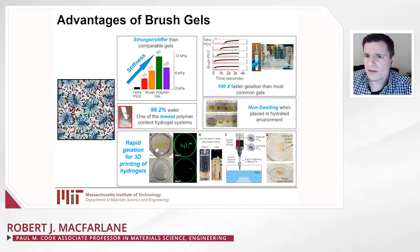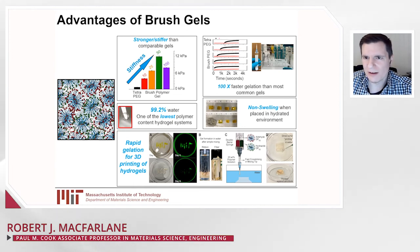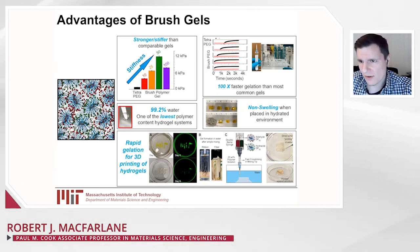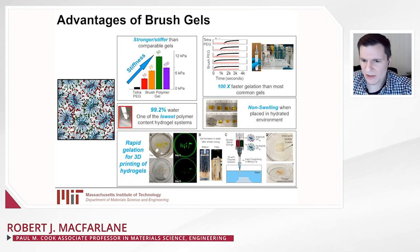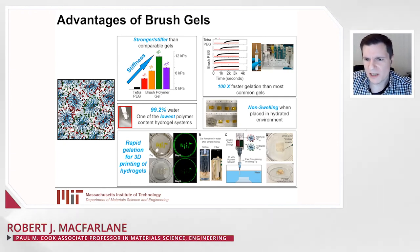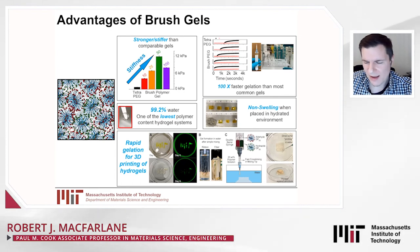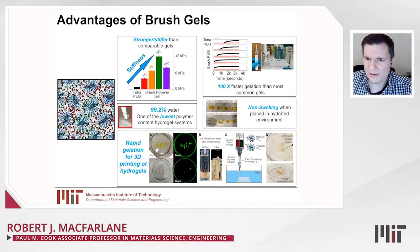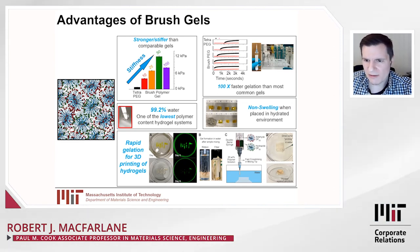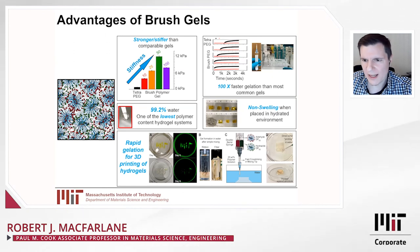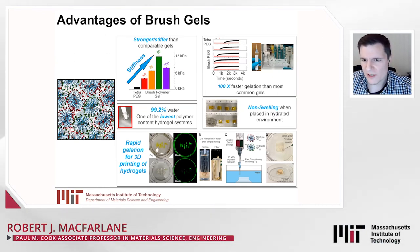These materials gel incredibly rapidly. A common tetra-PEG gel only gels after about 15 minutes, whereas our bottle brush gels can gel within just a few seconds — fast enough to write on a vertical surface or 3D print into a solution. Moreover, once made and placed into a hydrated environment, these materials do not swell. Shown here, a bottle brush polymer gel on top and a traditional gel on bottom: the bottle brush gel exposed to water only swells slightly, whereas a traditional gel very rapidly falls apart into a viscous liquid.